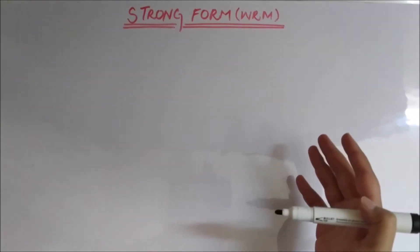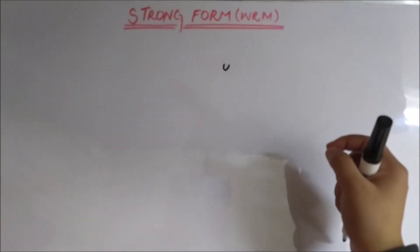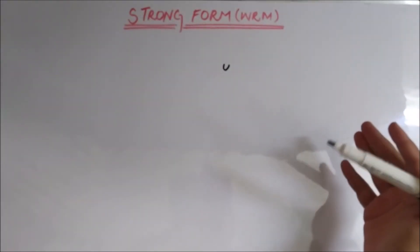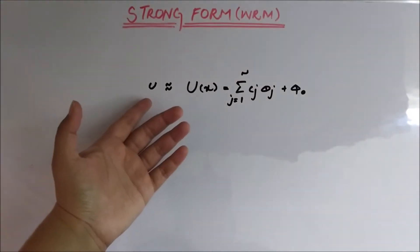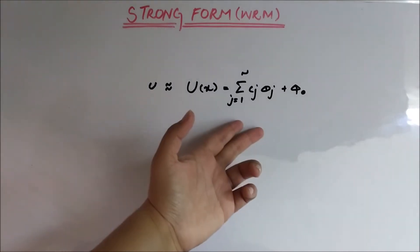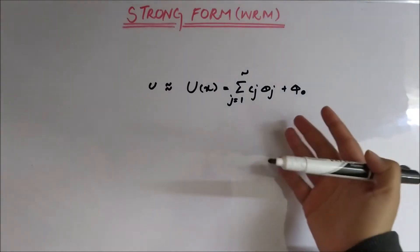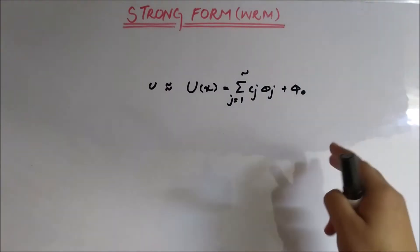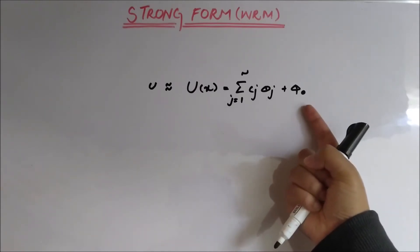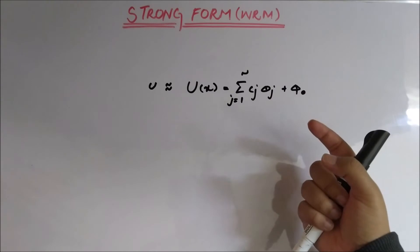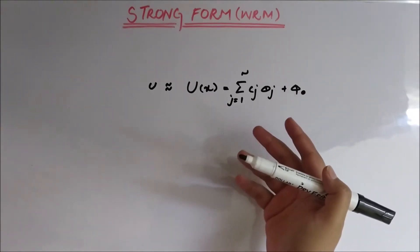In the strong form or weighted residual method, the solution u (displacement) is approximated in almost the same way as in the weak form or Ritz method — that is, u is approximated by capital U, which has a relation of this summation: c_j parameters, phi_j, and phi_naught, which are the shape functions. But here in the strong form, the conditions on phi_j and phi_naught are more precise or more strict.